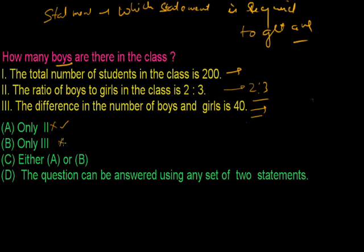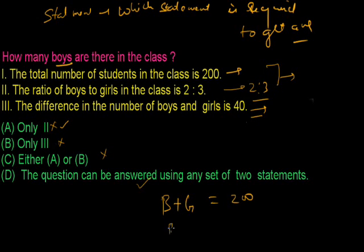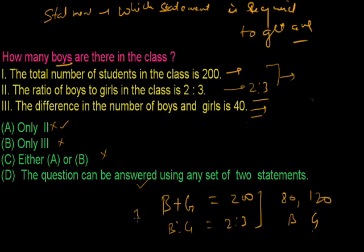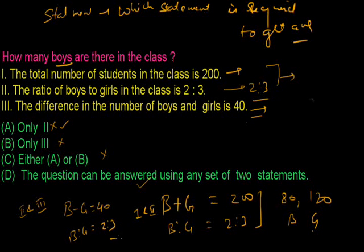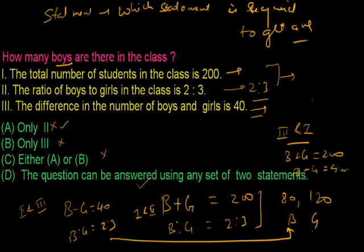The question can be answered using any set of two statements. If I take statements 1 and 2: total number of students is 200, and the ratio of boys to girls is 2 to 3 — these are two equations, so I can get the answer. Boys would be 80 and girls would be 120. If I use statements 2 and 3: the ratio of boys to girls is 2 to 3, and B minus G equals 40 — again I get the same answer. So any two of the statements are required to get the answer.